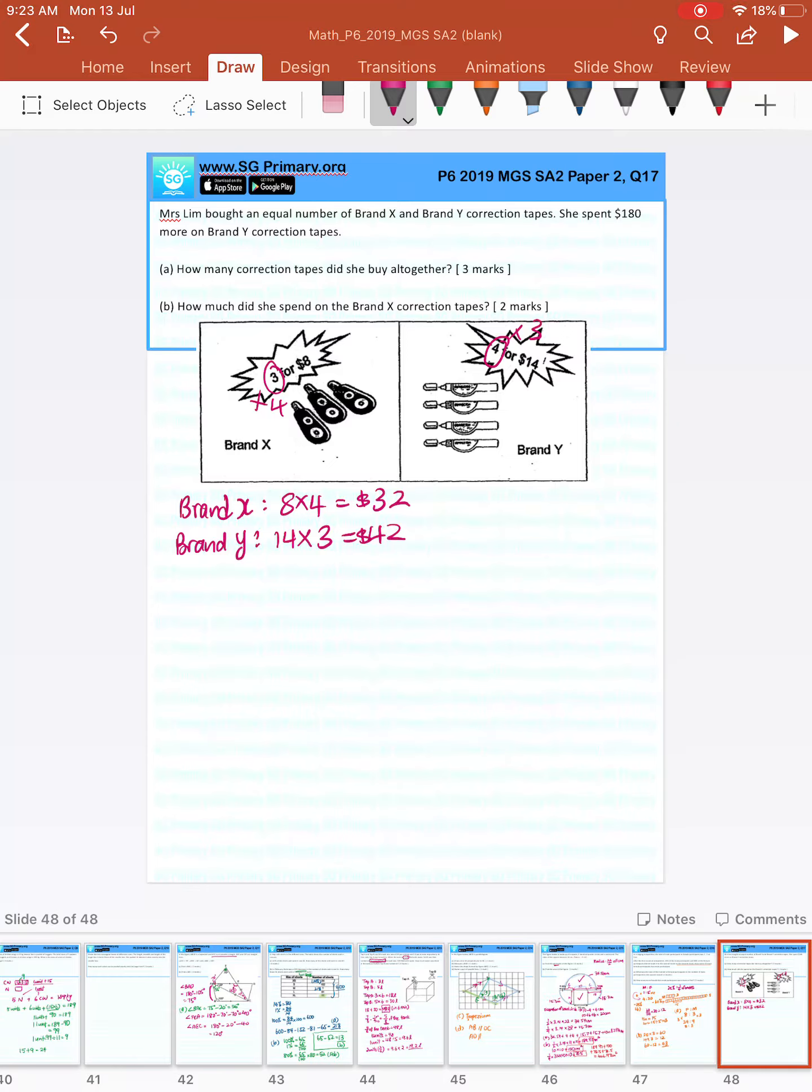So the difference is 10. How many of these 10s can we find in $180? $180 divided by 10 is 18. There are 18 sets of these differences.